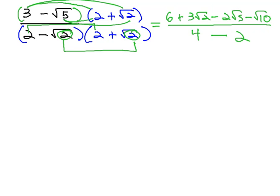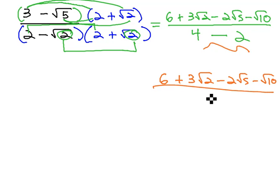The only simplifying we have here then is the 4 minus the 2. Comes out to 2, so we end up with 6 plus 3 root 2 minus 2 root 5 minus root 10 over 2.